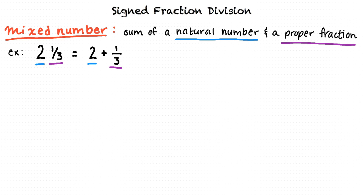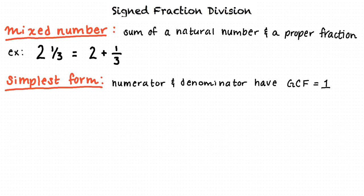For a mixed number to be in simplest form, the fraction part must be in simplest form. How do we know when a fraction is in its simplest form? A fraction is in simplest form when the numerator and denominator have a greatest common factor of 1.